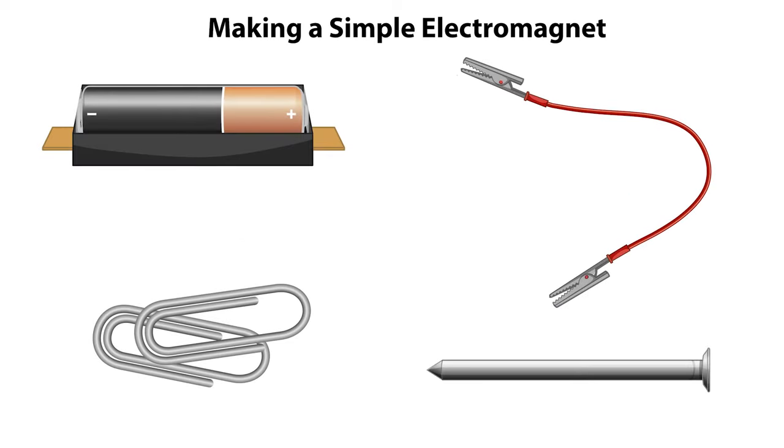Here we have an electrical wire with alligator clips, a battery, and a metal nail. How can we assemble these components to make an electromagnet that can attract some paper clips?